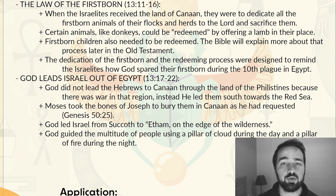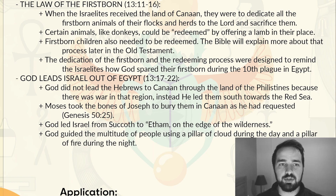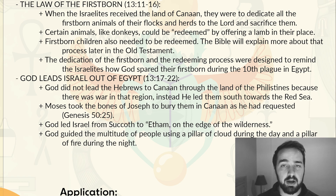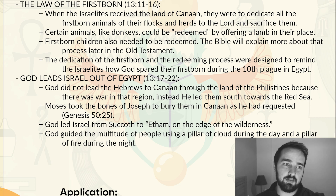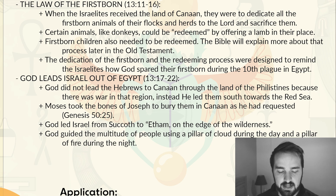In verses 17 through 22, God leads Israel out of Egypt. Pharaoh had told Moses to get all the people of Israel out of Egypt after the 10th plague, so now they're finally on their way — this is the Exodus. God didn't lead the Hebrews to Canaan through the land of the Philistines because there was war going on at that time; instead, he led them south out of Egypt towards the Red Sea. Moses, on his way out, took the bones of Joseph to bury them in the land of Canaan — fulfilling Joseph's request from back in Genesis chapter 50, where Joseph said to take his bones to Canaan when God fulfilled his promise.